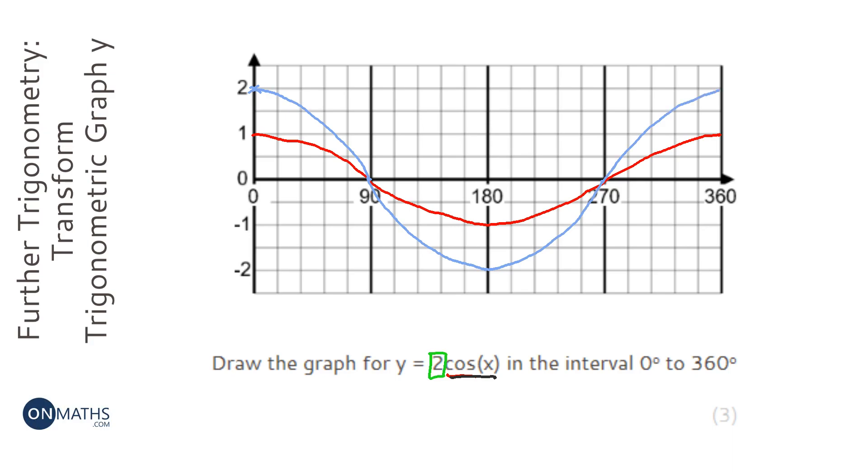So the blue one is my answer. I wouldn't normally draw both graphs, I would just draw my answer. And you might notice here that when you have a number before the cos x, or sine x, or tan x...